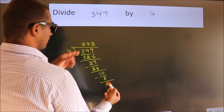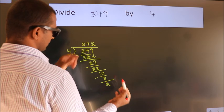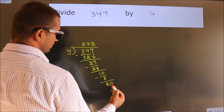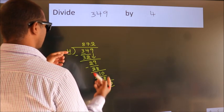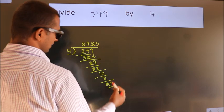After this, we already have the decimal, so we directly take 0, giving us 20. When do we get 20 in the 4 table? 4 times 5 equals 20.